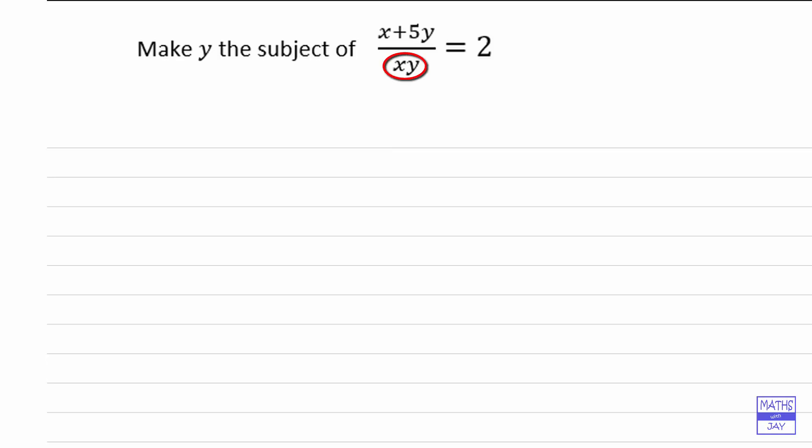It'll make it a lot easier. So multiplying both sides by xy will give us that x plus 5y is equal to 2xy.